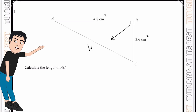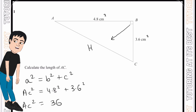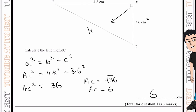We write a² = b² + c², so AC² = 4.8² + 3.6². Calculating that, AC² equals 36. Making AC the subject, we remove the square and get AC = √36, which means AC = 6 centimeters, and that is our answer.